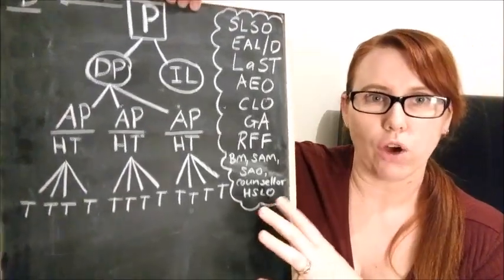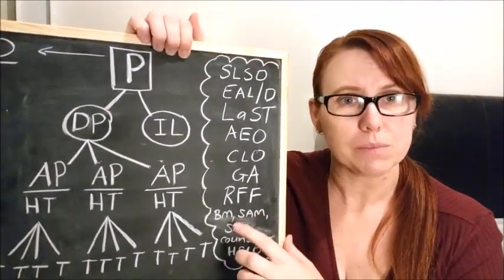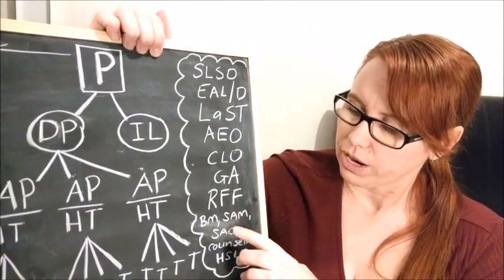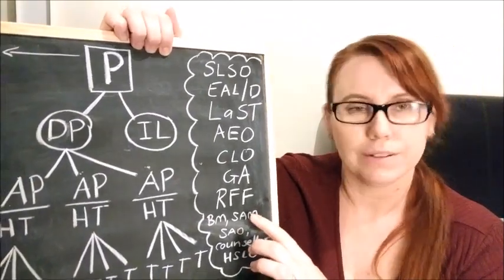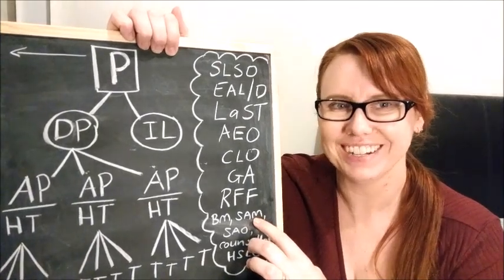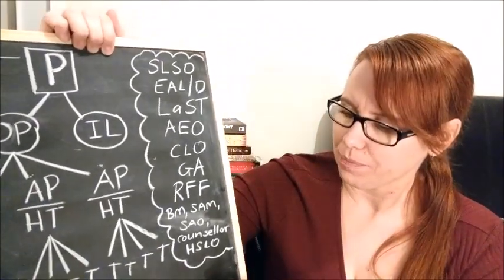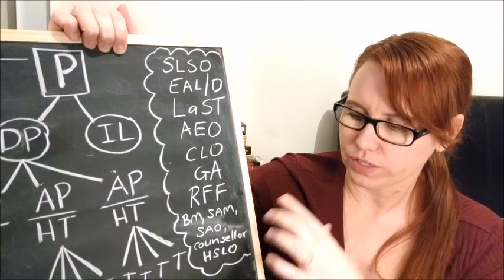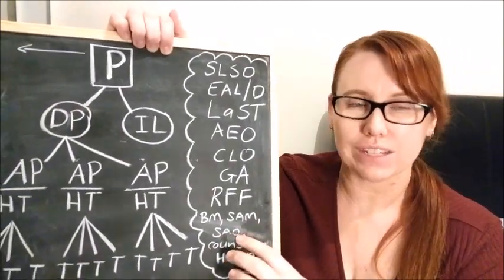Down the bottom, I've got some of the office roles. Schools might have a business manager. And then we've got the school administration or administrative manager or office manager, and then officer, the school administrative officer.